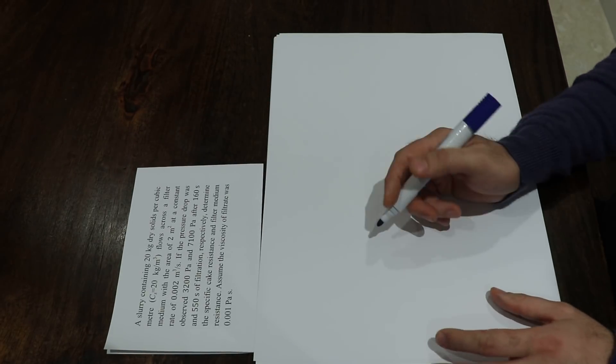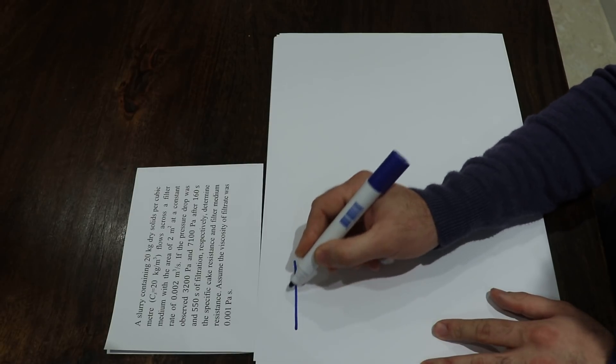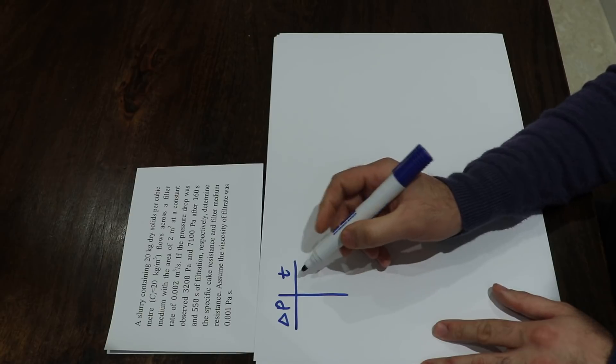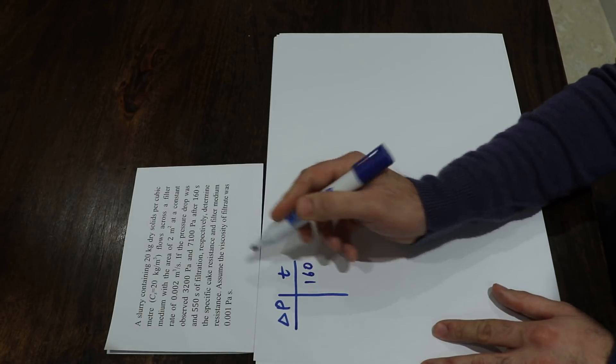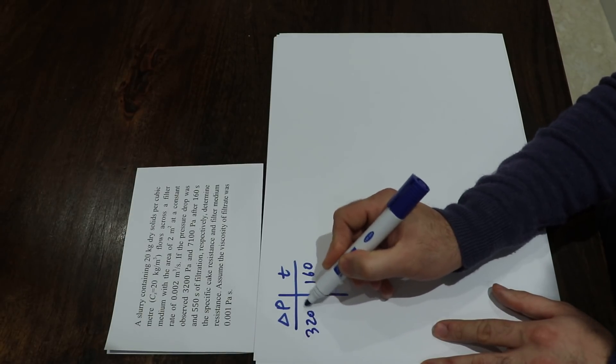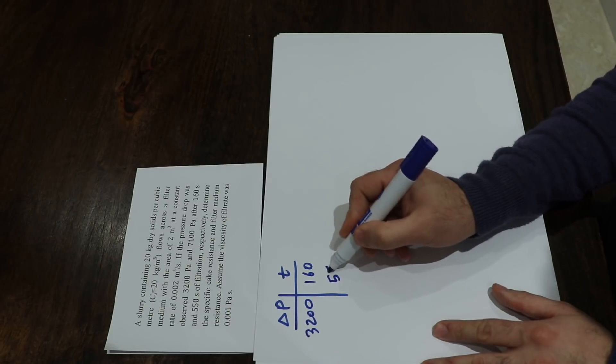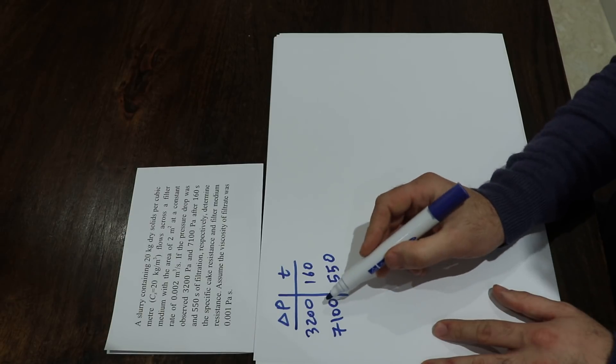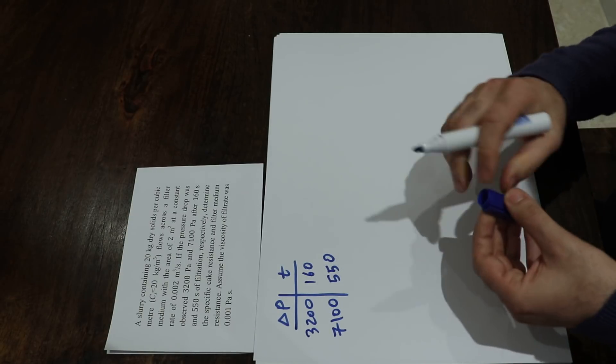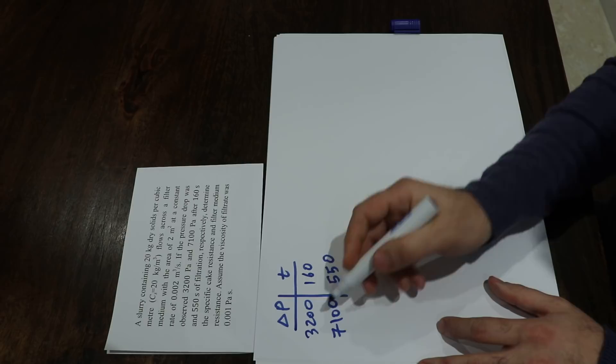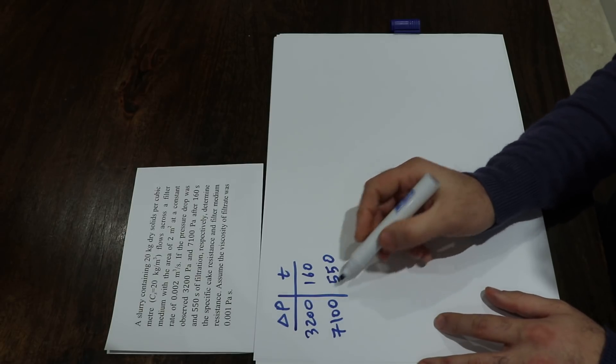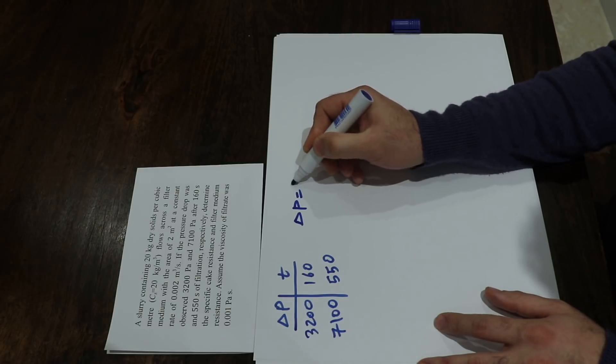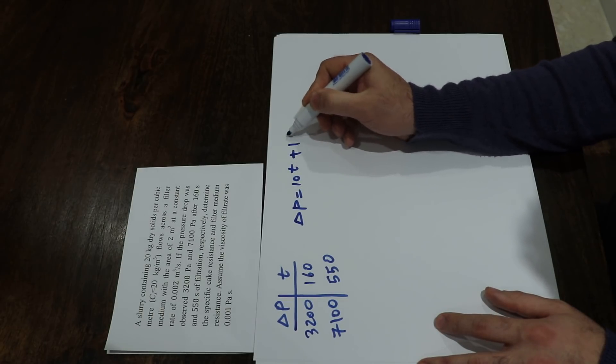So here you have basically delta P versus time. You know that after 160 seconds delta P equals 3200, and after 550 seconds delta P equals 7100. So using this data you can calculate the equation of the linear line connecting these two points. And that equation will be equal to delta P equals 10T plus 1600.